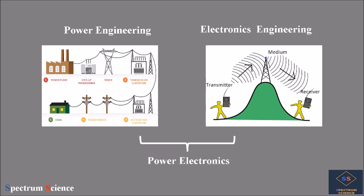In power electronics, the apparatus and electronic equipment work on the principles of electronics but at high power levels — that is, they are rated at comparatively high power.